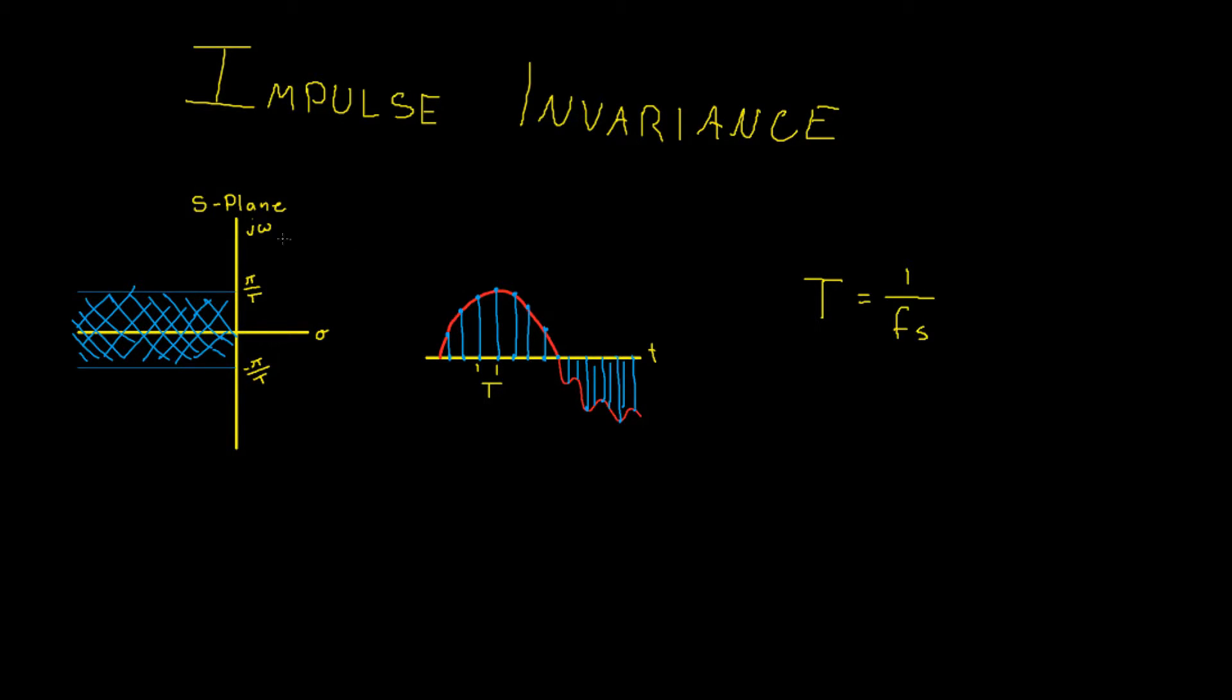This can also be visualized in the s-plane where our j-omega, our imaginary axis, shows all the frequencies, and our pi over T, our period, shows what frequencies will be mapped into our new digital filter. You can see by this example that as we have a smaller T, or as T tends to zero—in other words the sampling becomes infinitely small—that will map the entire left half plane.